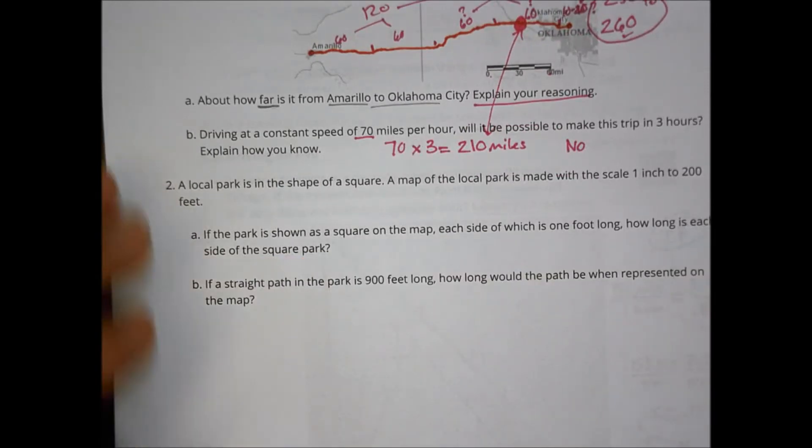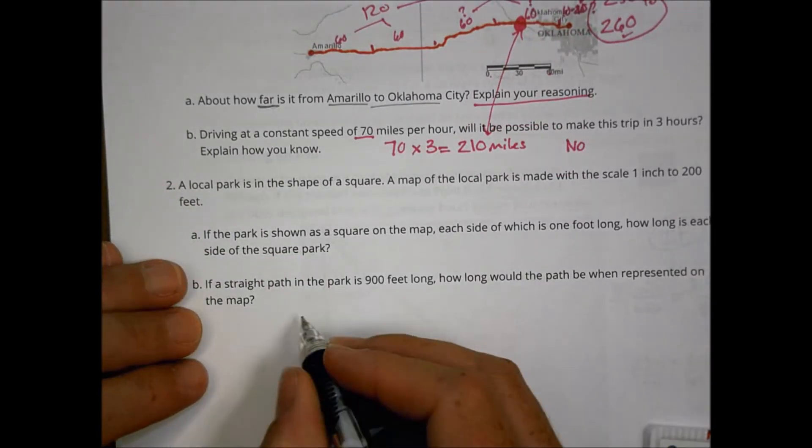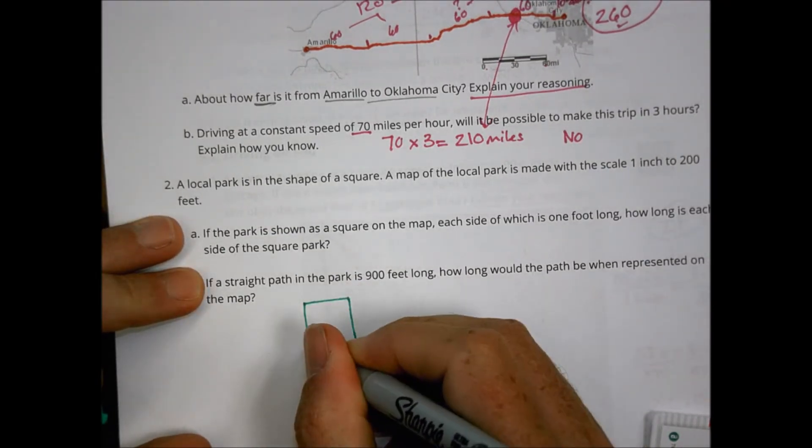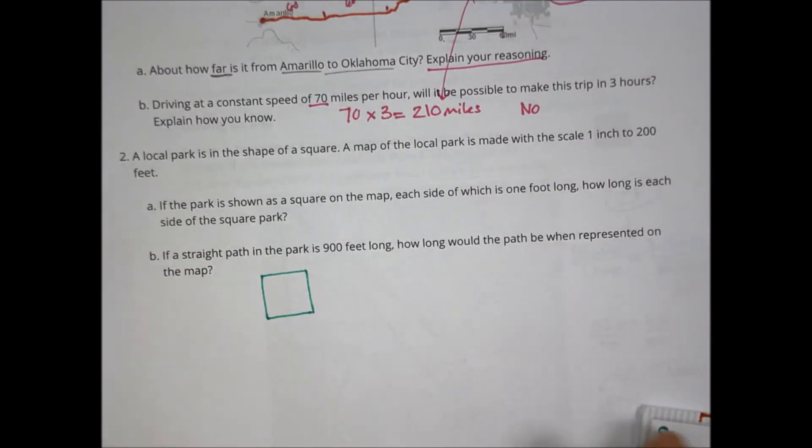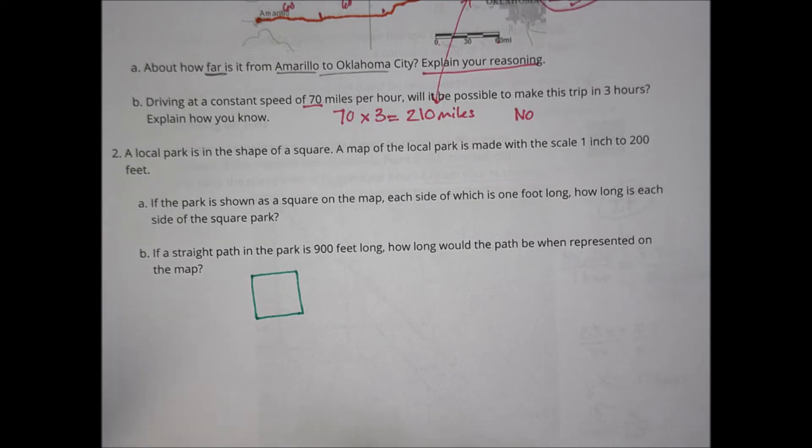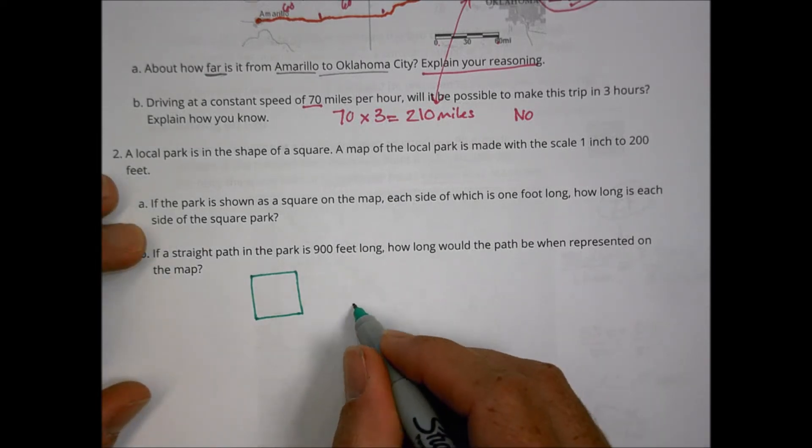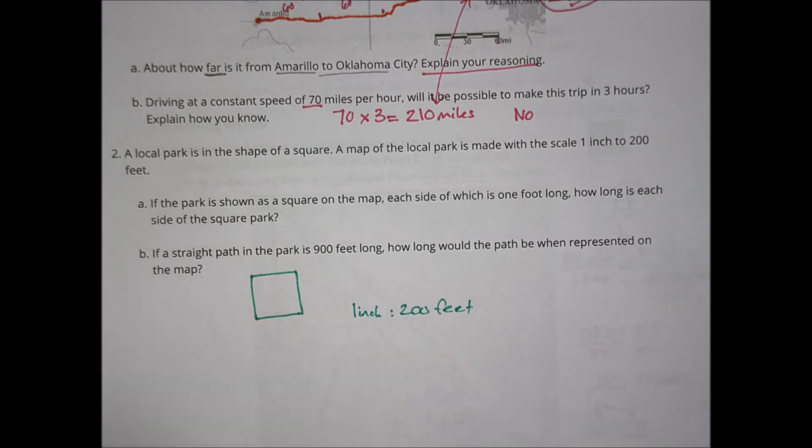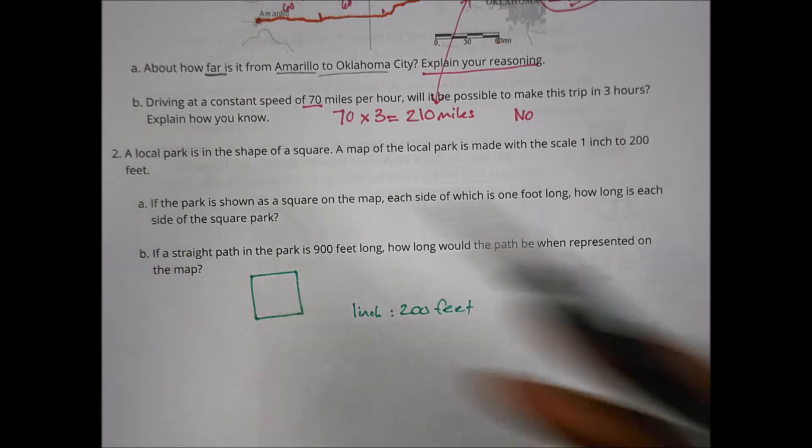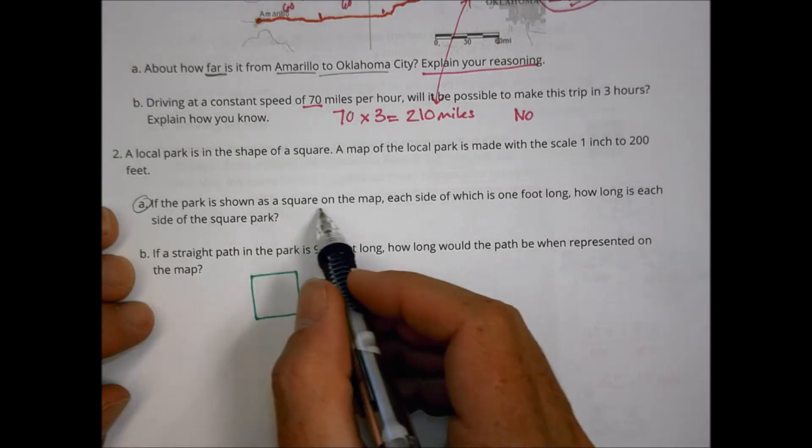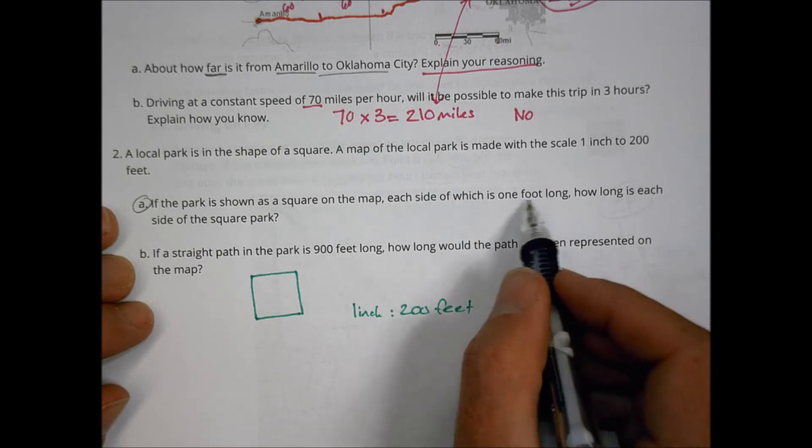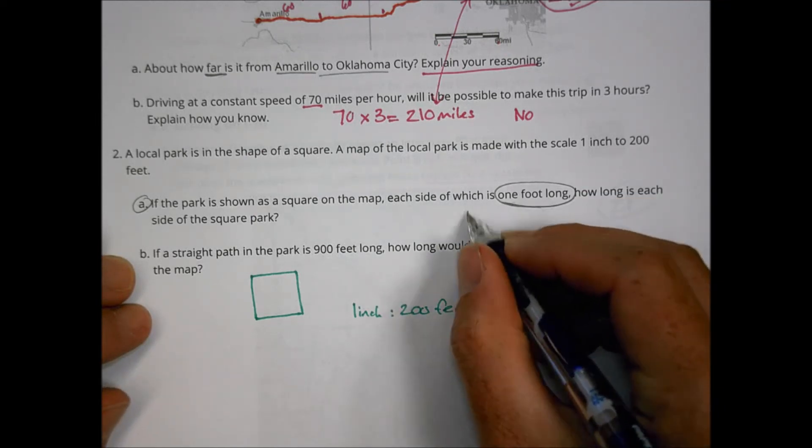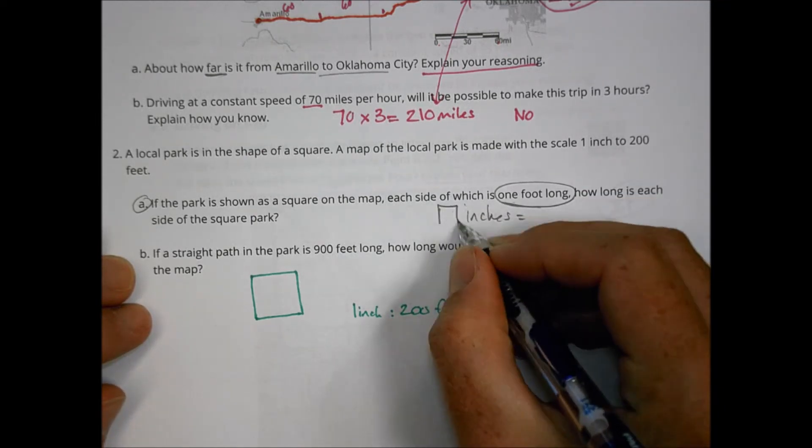Number two, we have a question says a local park is in the shape of a square. So let's just draw a picture. I like to draw pictures when I can. It doesn't mean they're perfect, but I like to draw them to help me out. Local park is in the shape of a square and the map of the local park is made with a scale of one inch to 200 feet. So if they drew it out, an inch would equal 200 feet. And mine's not to scale. I just drew a square. If the park is shown as a square on the map, each side of which is one foot long. How long is each side of the square park?